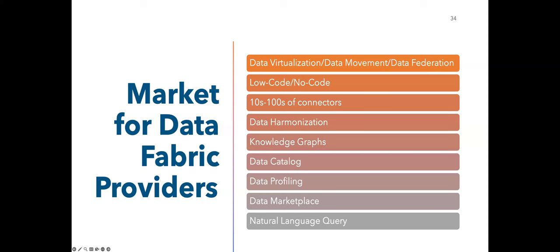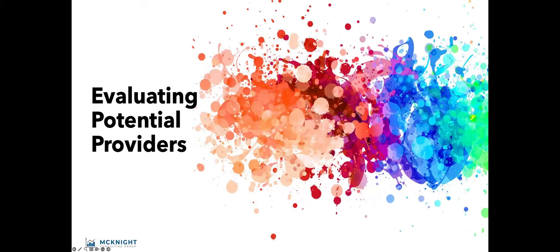This semantic layer is an overlay for the underlying source data accessed in memory or through data virtualization. Knowledge graphing, a data catalog for storing data assets, metadata, and enriching those assets with business logic, taxonomies, and data models as needed. Data profiling, data marketplace capabilities, and natural language query — any query engine being built today is with natural language, and these definitely are as well. So you want to step into the market and evaluate these potential providers.